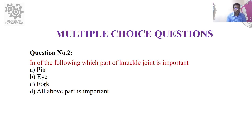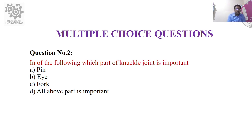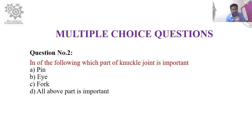Question number two: Which part of the knuckle joint is most important? Option A: pin, option B: eye, option C: fork, option D: all of the above. Think and keep your answer in mind; I will cross-check at the end of the session.